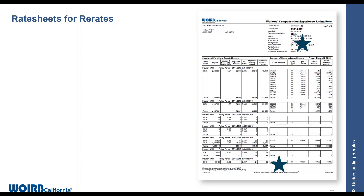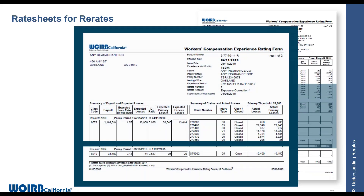Here's an example. We have an experience modification that has been re-rated. In the header section, this is re-rate number two, meaning there was an initial rating, then a re-rate of that, and now we're on the second revision. The reason for the re-rate was an exposure correction. You'll see a little number one after 'exposure correction' — that tells you there's a corresponding footnote explaining what that exposure correction is really about.